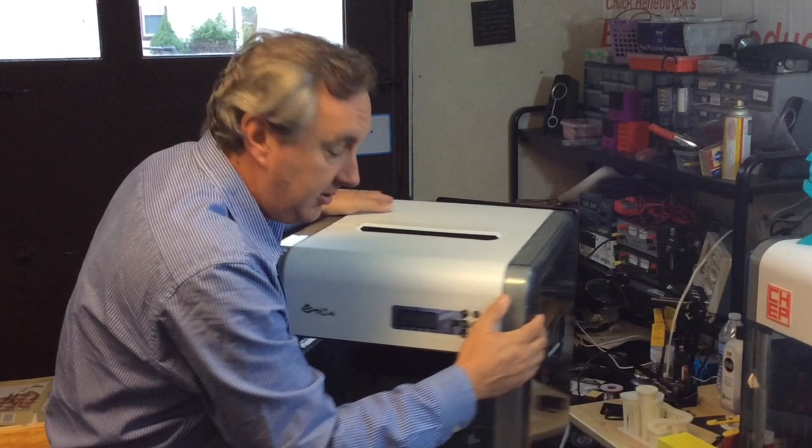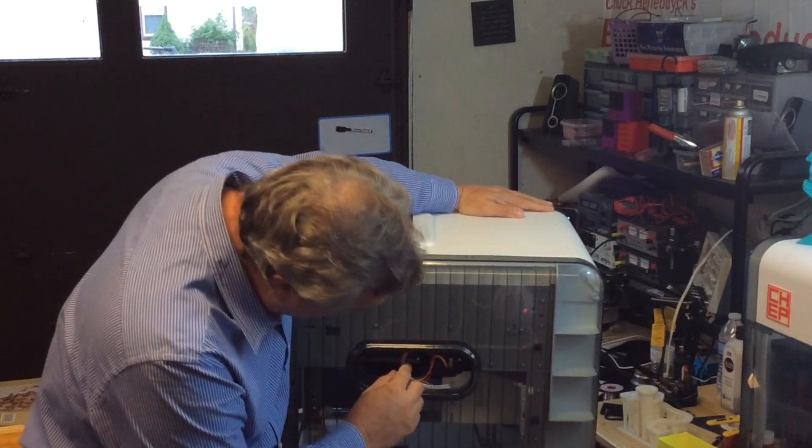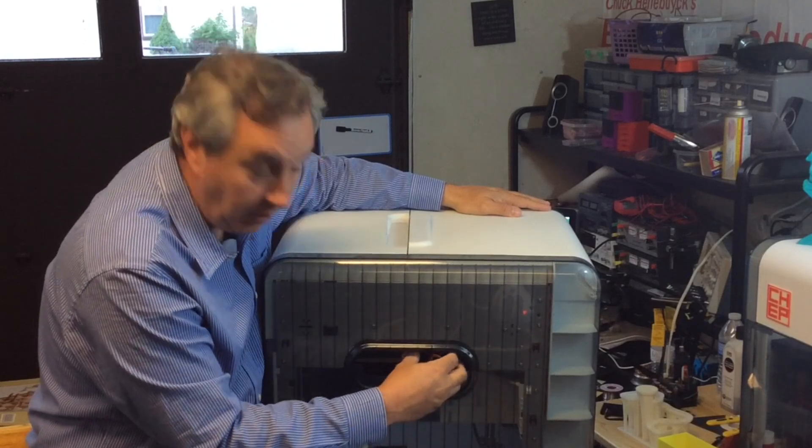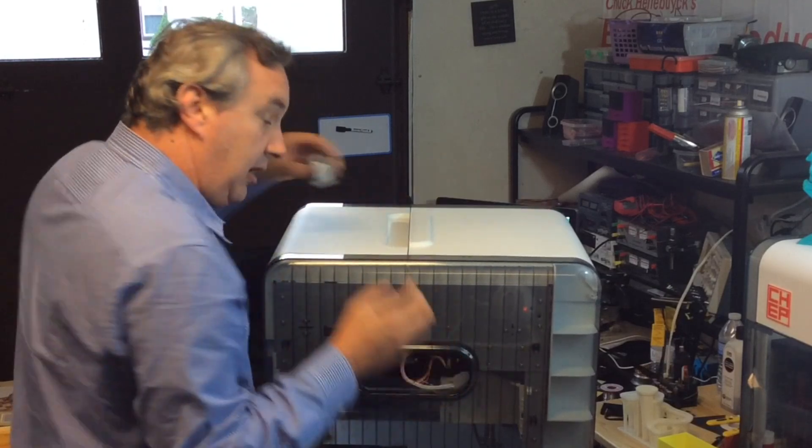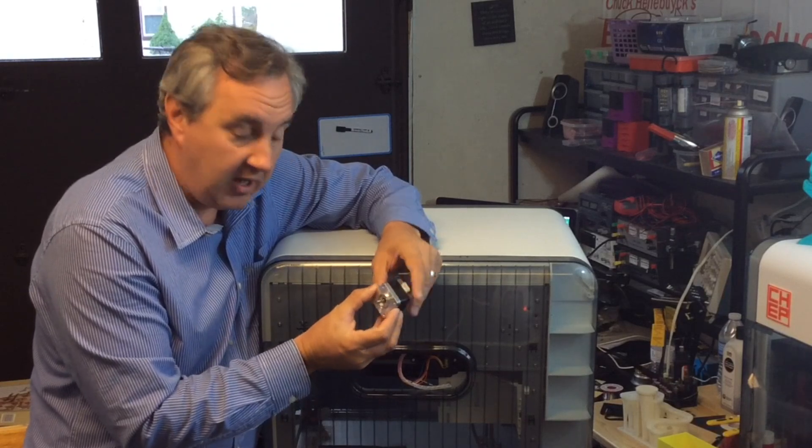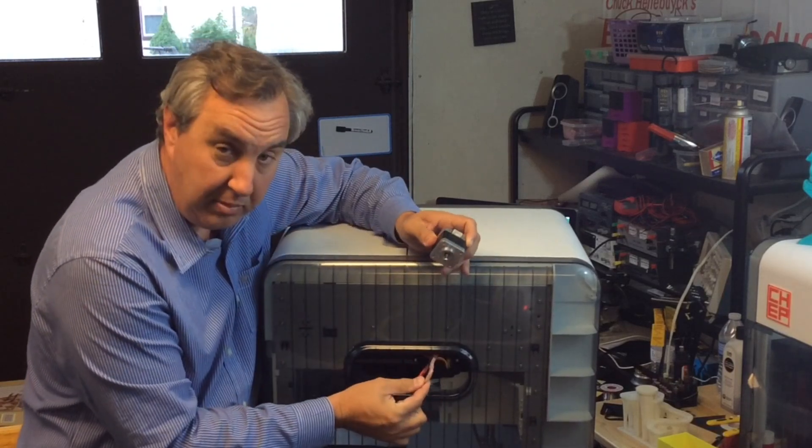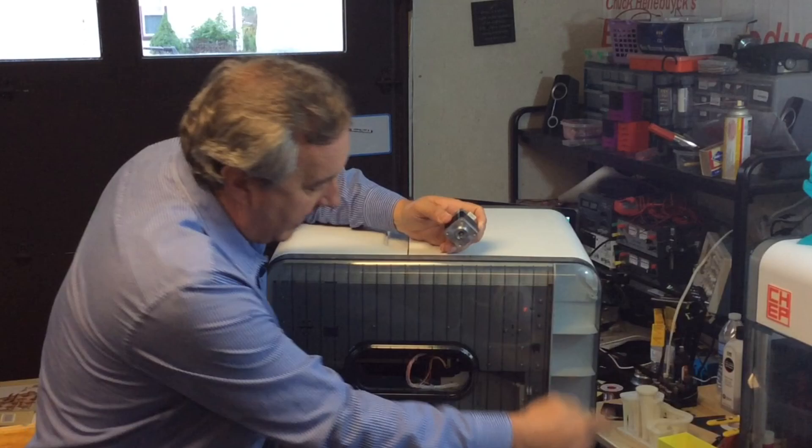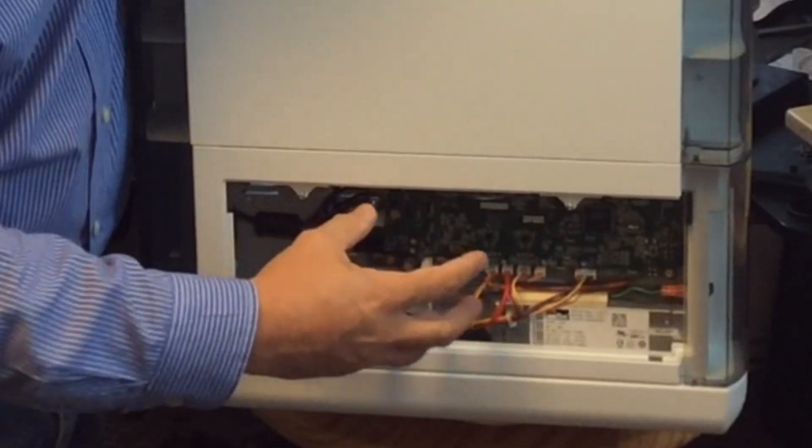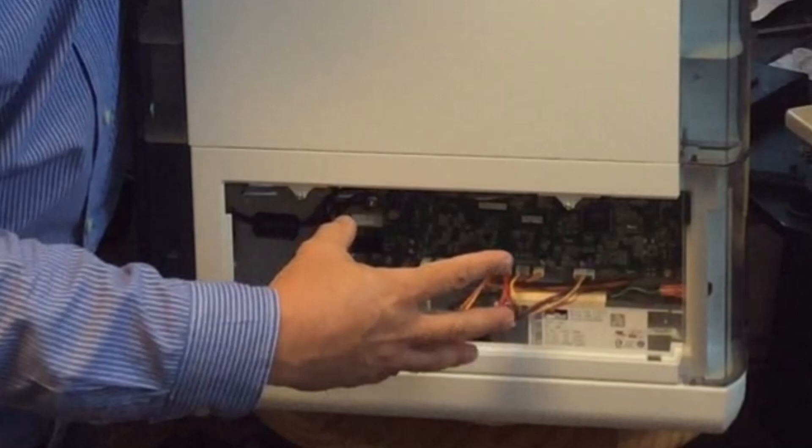It starts over here at the x-axis. The x-axis mechanism is a motor, a stepper motor that's right here. And there's a connector and a harness that goes through this wound plastic cabling back to the board that controls the whole printer. This is the motherboard.